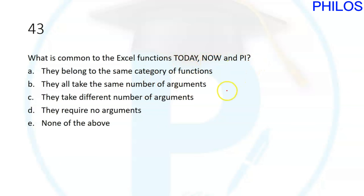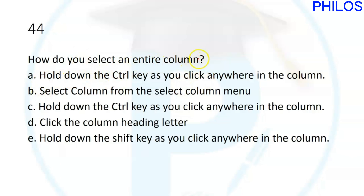Question forty-three: what is common to the Excel functions TODAY, NOW, and PI? They do not all belong to the same category — TODAY and NOW are text/date functions while PI is mathematical. However, they all require no arguments. Enter =TODAY(), =NOW(), or =PI() and each returns a value without any argument entered. The correct answer to question forty-three is D: they require no arguments.